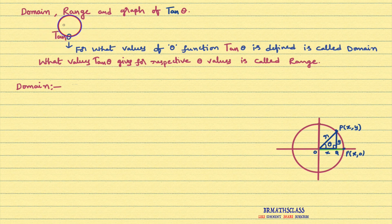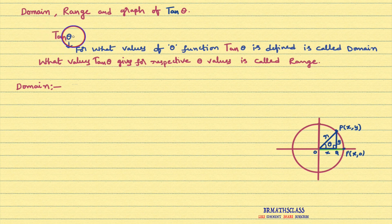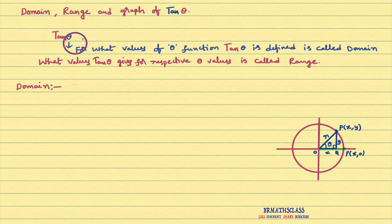What is the general definition of domain of the function? For what values of theta the function tan theta is defined is called domain of this function. What is range? What values tan theta gives for respect to theta values? For example, theta equal to 45 degrees — tan 45 degrees is 1, so 1 will be in the range of this function. Tan 60 degrees is root 3, so root 3 will be in the range of this function.